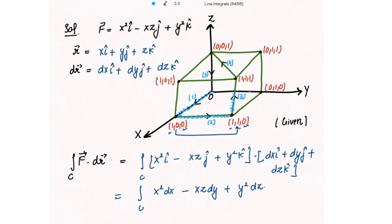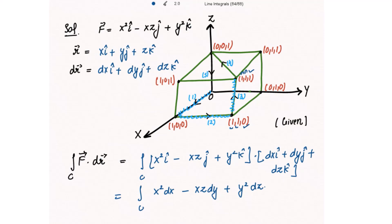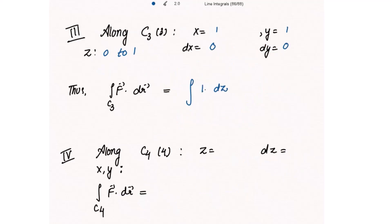Along path C3, x is constant at one and y is constant at one, while z varies from zero to one. Since x and y are constant, dx is zero and dy is zero. The integrand reduces to y squared dz, where y equals one, so it becomes the integral of one with respect to z from zero to one, which equals one.